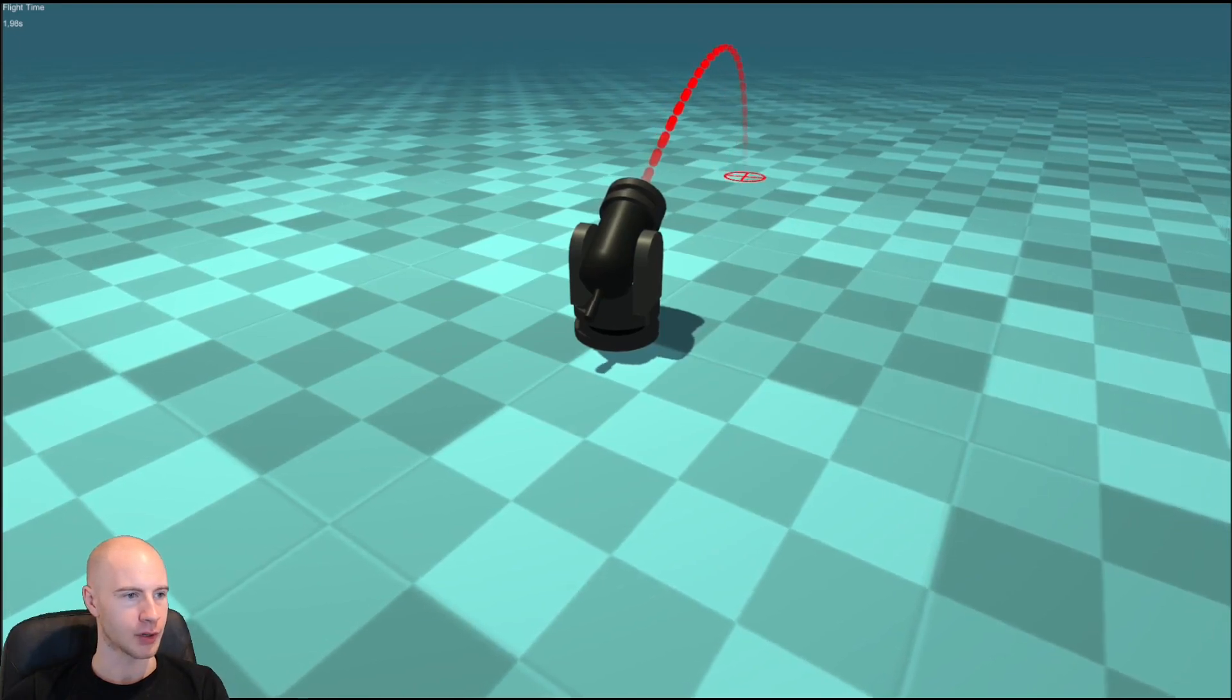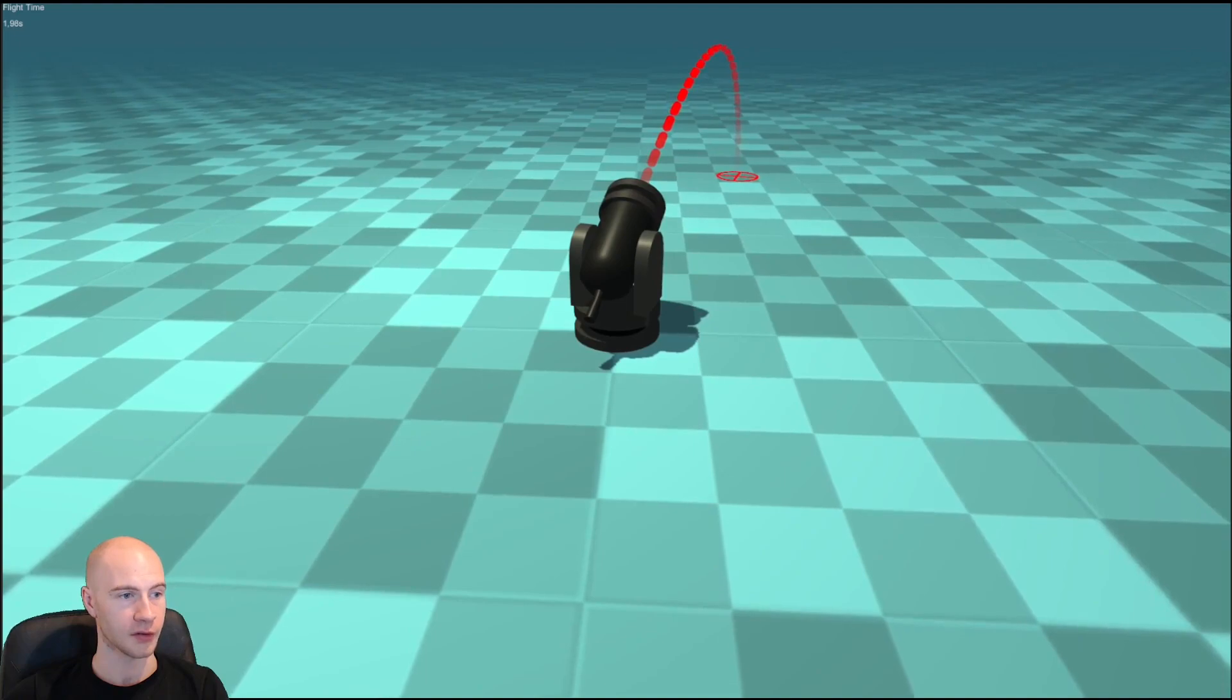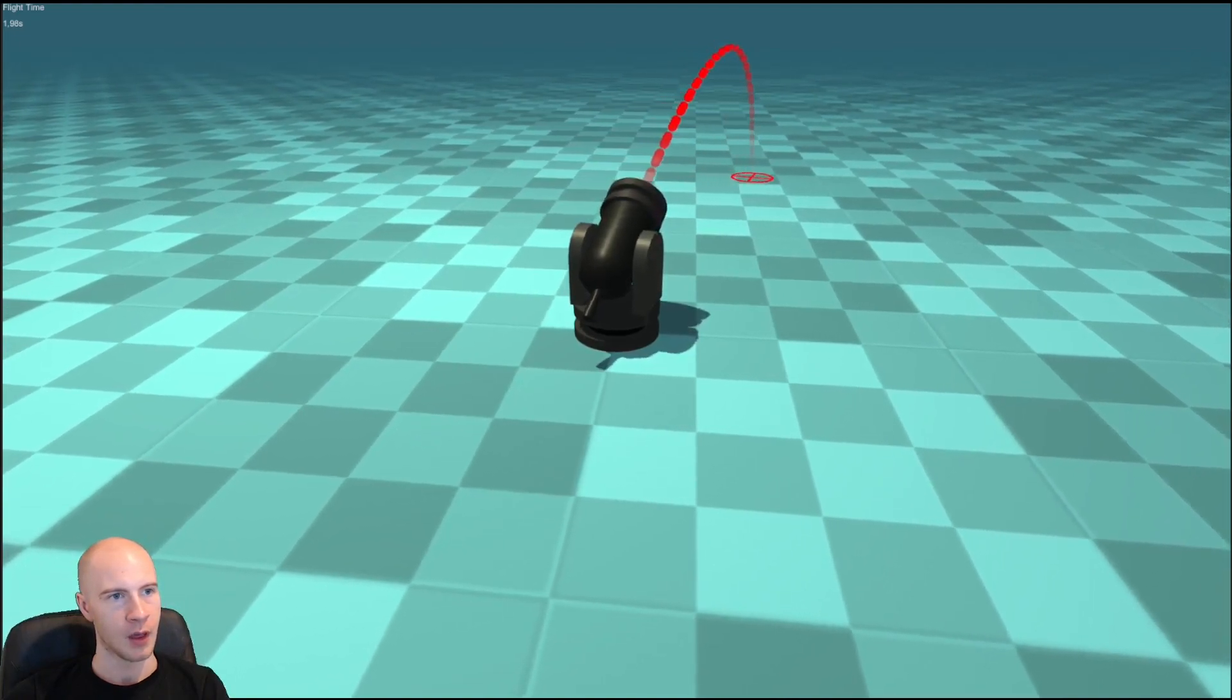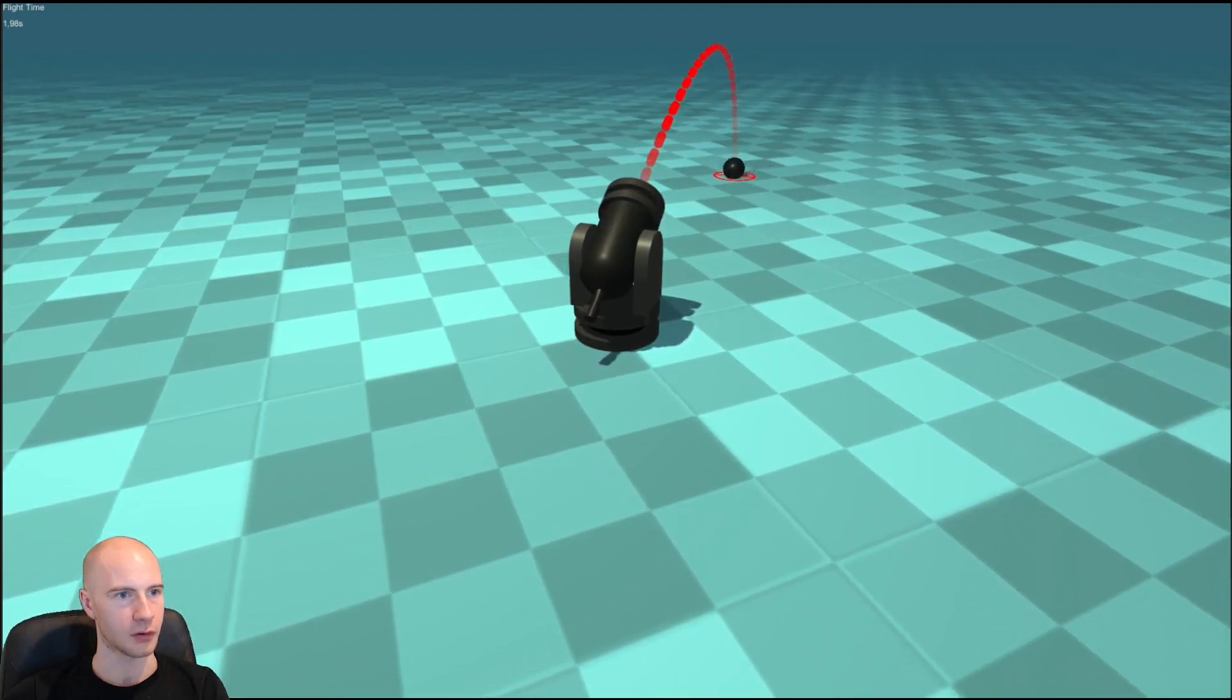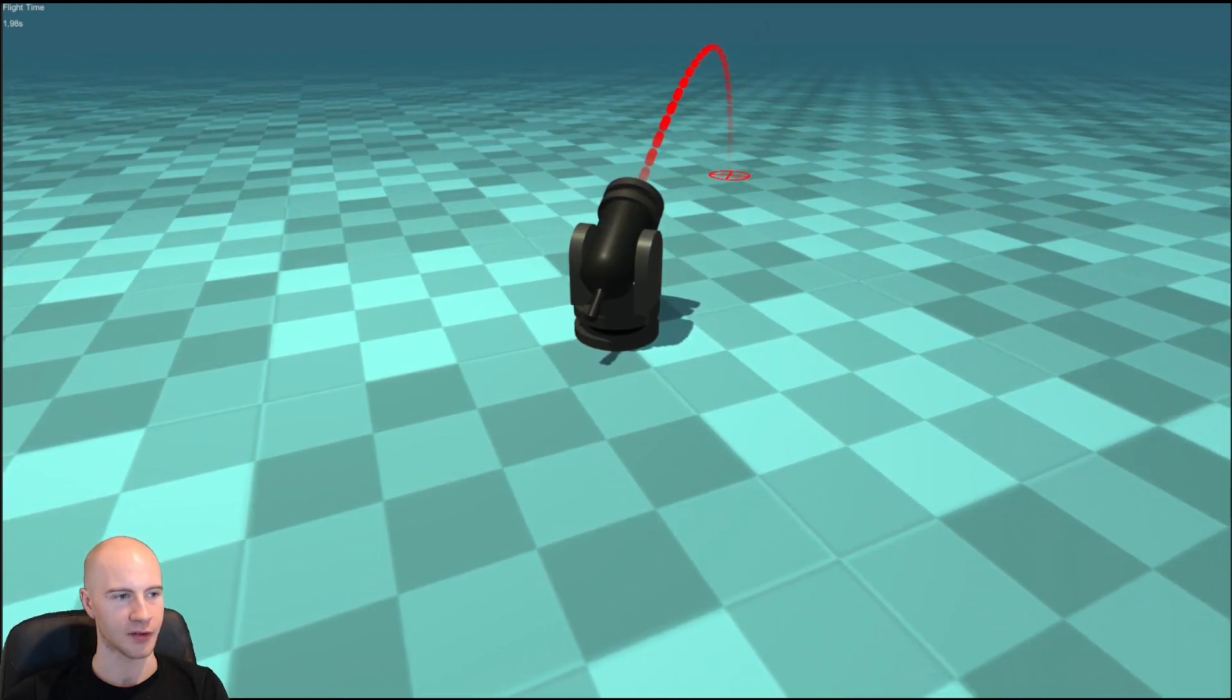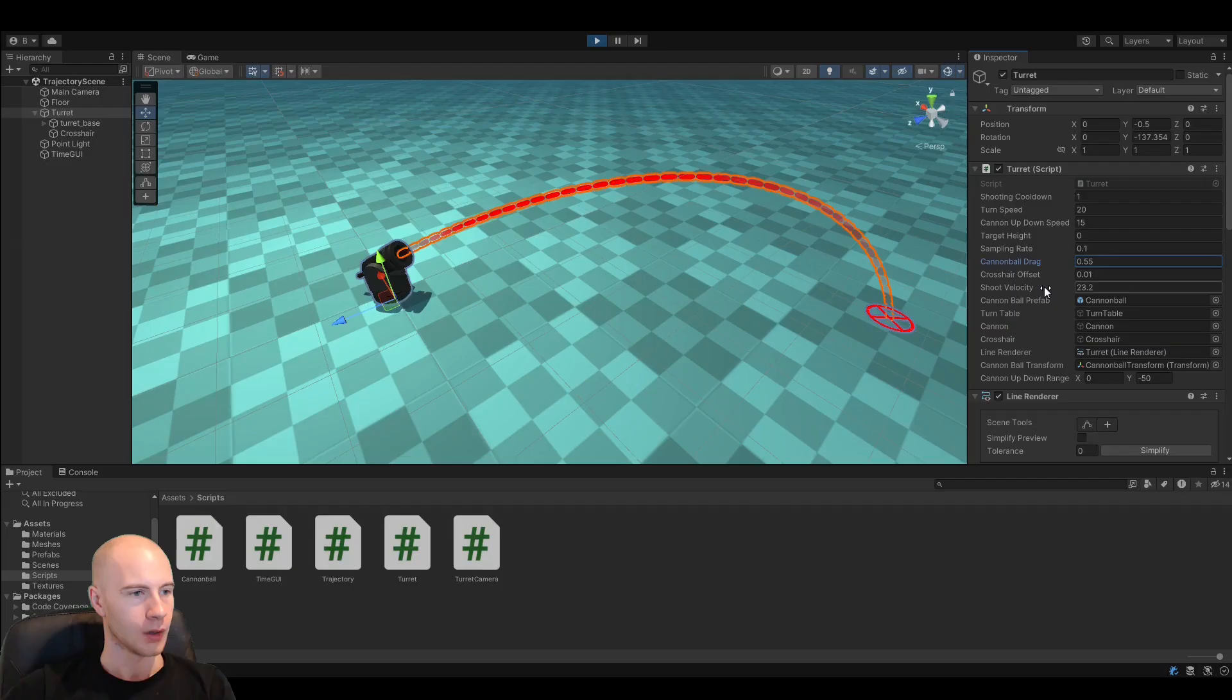Here's a small demo that predicts a path for a cannon ball that is going to be shot out of this turret. And it uses the formula I showed just now and you see the cannon just follows the path and hits the target mark exactly where predicted. And you can find the demo below as usual. You can also play around with the values here and you see how the trajectory changes and you can adjust the drag.